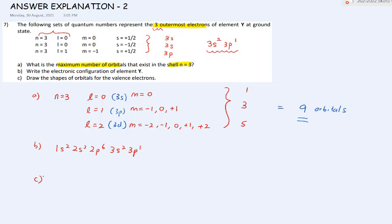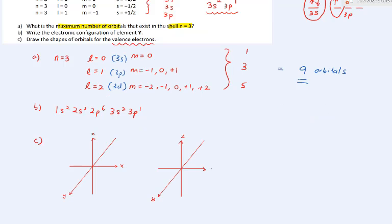For part C, draw the shapes of orbitals for the valence electrons. The valence electrons are 3s2 and 3p1, so you need to draw 2 orbitals: 1 orbital for 3s and 1 orbital for 3p. Draw the spherical shape for 3s, and any one of the 3p orbitals — for example, 3px as a dumbbell shape along the x-axis, or 3py or 3pz according to the axes.